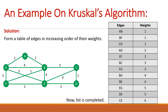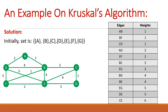Now we select edges from top to bottom. But before selecting and including edges in our spanning tree, we make a set where every vertex is in a separate set. There are vertices A, B, C, D, E, F, and G, so we make seven separate sets. Now we select edges from top to bottom.